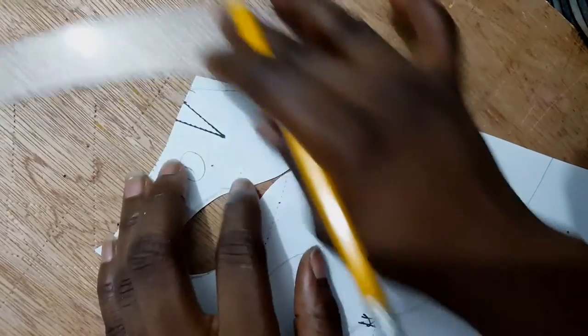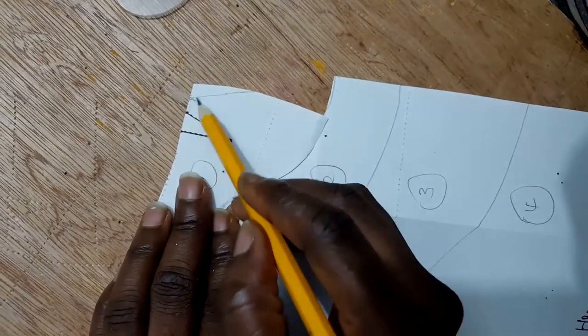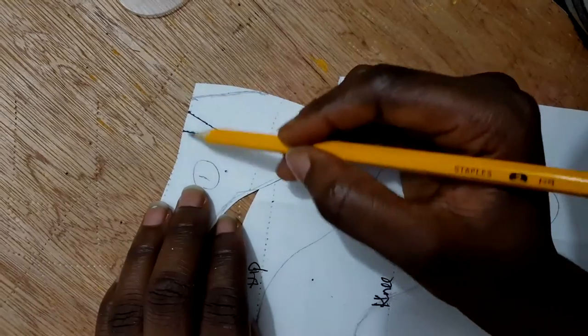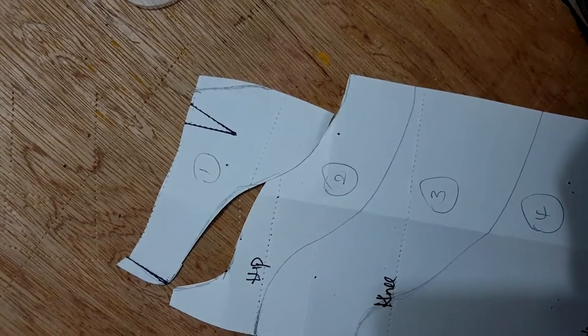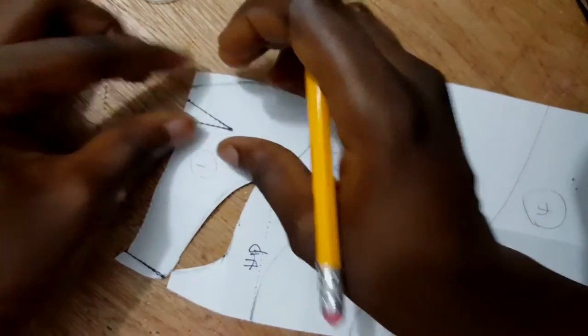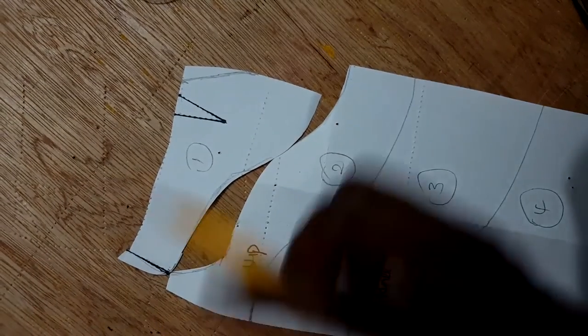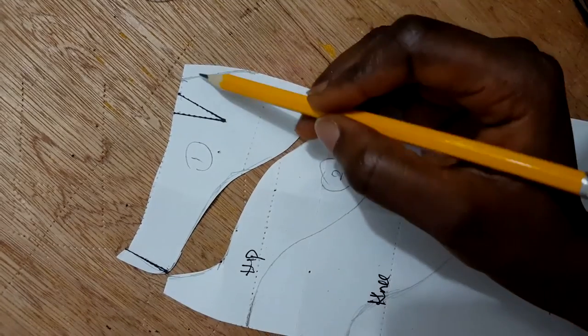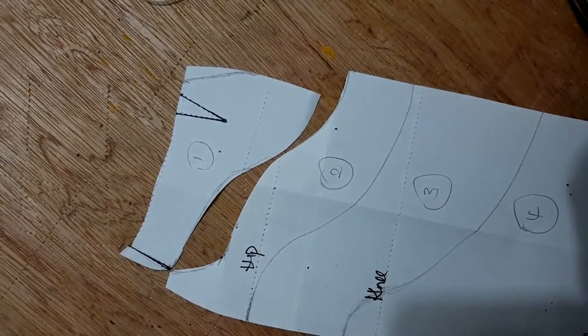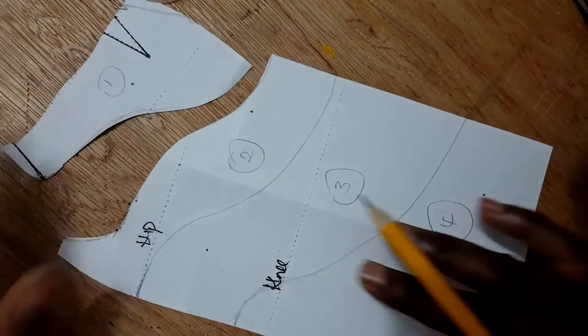So you just blend it in and take it out from the side, the same amount. It won't affect the design because if you close this dart, this goes in. So instead of closing this dart, you can take it out from the side, and you have a dartless upper part of your design.